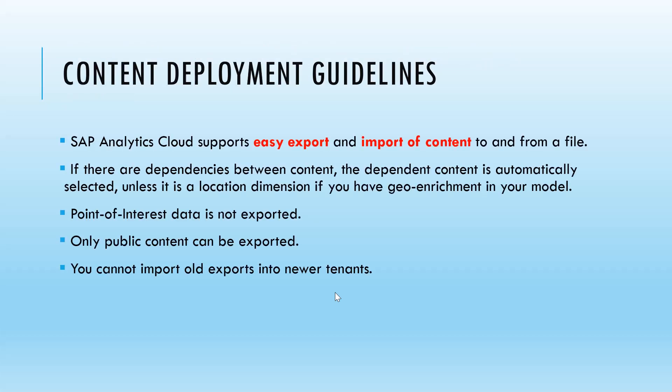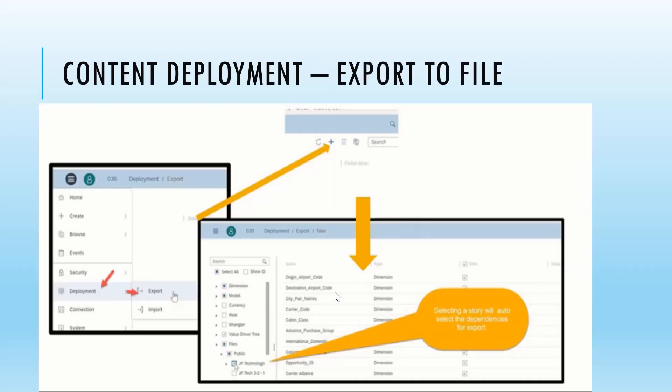What are the content deployment guidelines? When we want to deploy content from one model to other systems, SAP Analytics Cloud supports easy export and import of content to and from files — no code is required for deployment. If there are dependencies between content items, the dependent content is automatically selected unless it is a location dimension. Point of interest data is not exported. Only public content can be exported. You cannot import old exports into newer tenants, so it is important to understand version compatibility. The deployment option is available in the SAP Analytics Cloud menu — you can choose what to export, such as stories in the public folder, for deployment to other environments.